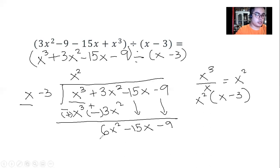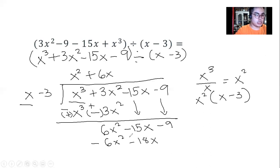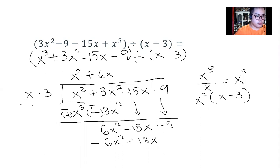We divide 6x squared — the first term of this result — by x, giving us plus 6x. Using the distributive method for multiplication, we get 6x squared minus 18x. We change the signs again and repeat the same cycle.